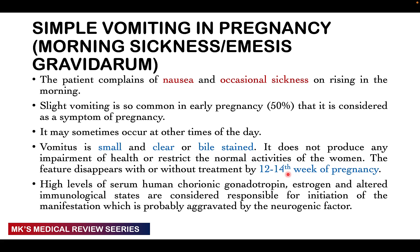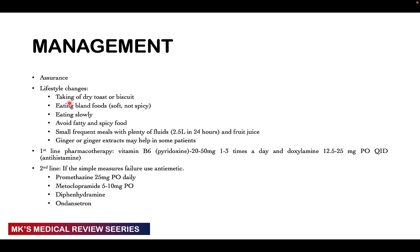Morning sickness is caused by high levels of serum human chorionic gonadotrophin and estrogen, as well as altered immunological states, which have been implicated as initiating factors. It can also be aggravated by neurogenic factors, especially when the mother is not mentally prepared for an unplanned pregnancy. Management includes reassurance and lifestyle changes: dry toast or biscuits, bland soft foods, avoiding fatty and spicy foods, small frequent meals with plenty of fluids about 2.5 liters in 24 hours, ginger extracts, and fruit juice. First-line pharmacological therapy is vitamin B6 (pyridoxine) 20 to 50 mg one to three times a day, and doxylamine 12.5 to 25 mg orally four times a day — an antihistamine.